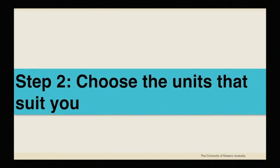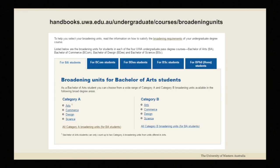You can choose the units that suit you from a wide range at UWA. They are all listed in the handbook. Just choose the degree course you're studying to see the broadening units available to you. Each degree is listed in the tabs across the top.